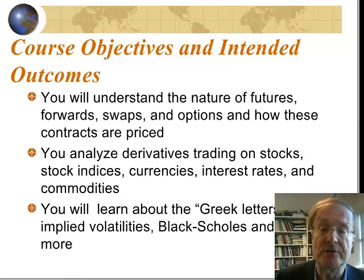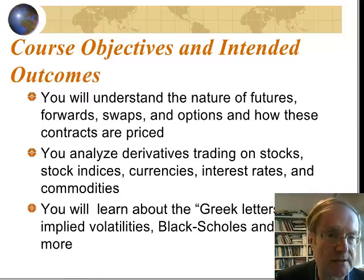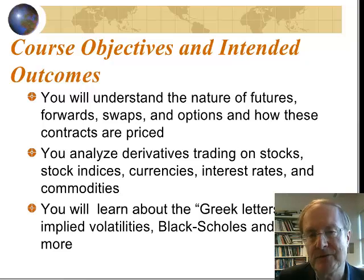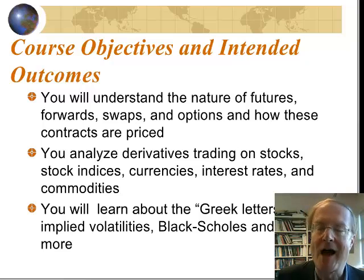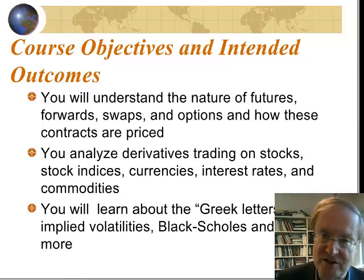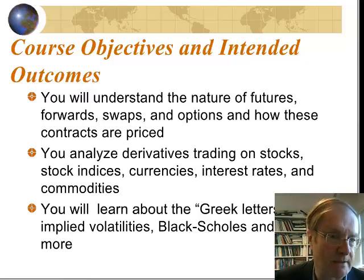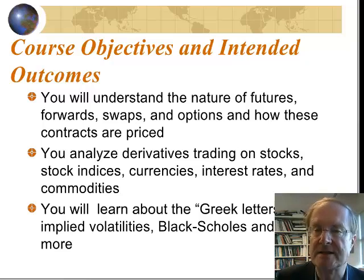We'll be analyzing derivatives trading on many different underlying assets: stocks, stock indices, currencies, interest rates, commodities and much more. You'll also learn about things called Greek letters — these are delta, gamma, vega, rho and so on. Actually vega is not a Greek letter, but derivative traders call it one. Delta, gamma, vega and rho all describe different aspects of the risk in a derivative or a derivatives portfolio, and we'll be understanding them on this course.